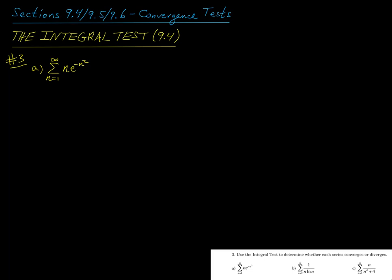Next up is question 3. It says, use the integral test to determine whether each series converges or diverges. For part A, we're looking at the sum of n times e to the negative n squared, where n varies from 1 to infinity.